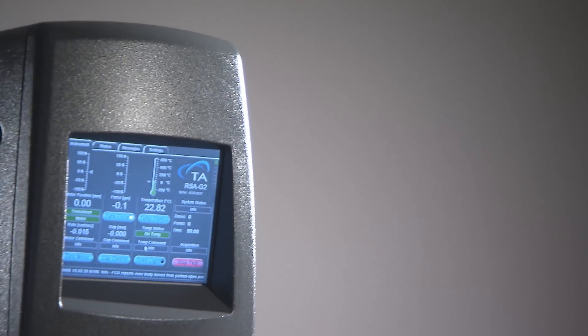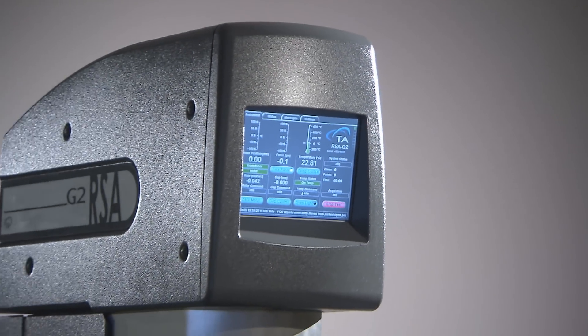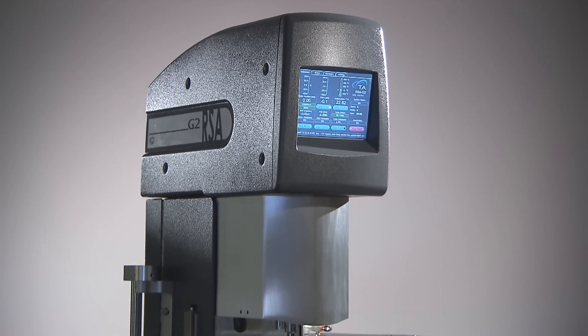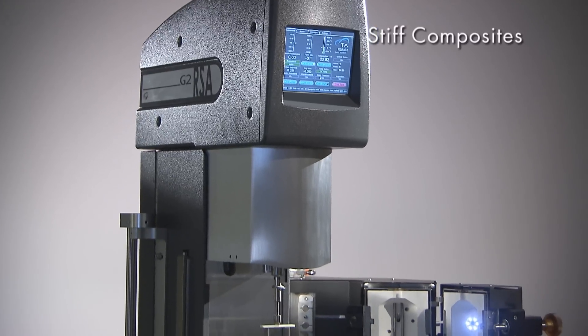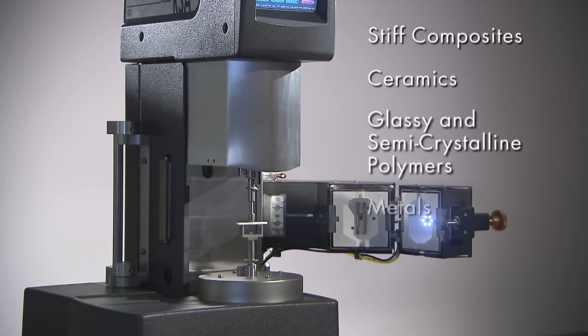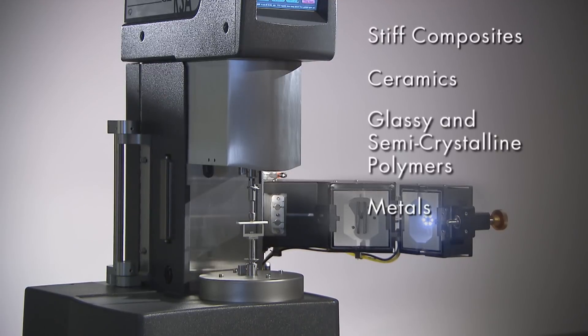With such a broad range of specifications and clamping systems, the RSA-G2 is ideally suited for testing materials ranging from stiff composites, ceramics, glassy and semi-crystalline polymers and metals, to materials of moderate stiffness.